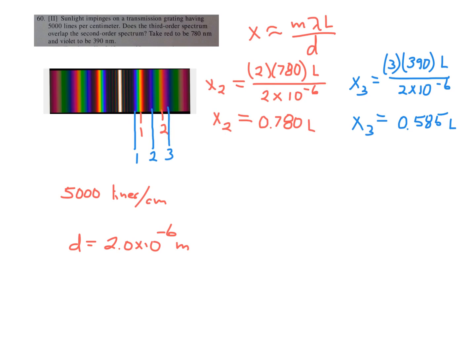If you check this with the more accurate equation as well, the d sine theta equals m lambda, you will find as well that the third order violet will indeed overlap or come before the second order red.